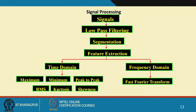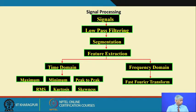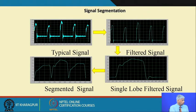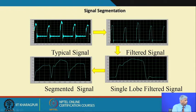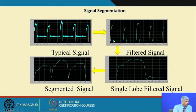Once features were extracted, they could be mapped to an artificial neural network program. A typical signal has a lot of noise. We applied low-pass filtering and obtained a filtered signal where the high frequency effects were removed. We then magnified one lobe, removed the lull periods, and stacked them together into a segmented signal.